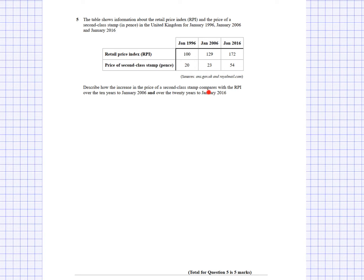I need to compare the increase in the price of the second-class stamp with the RPI. RPI is the concept that prices in general are increasing or decreasing - it's a measure of inflation. It looks at certain items and services that people might purchase and calculates a rough estimate of how much more a person is likely to spend in a whole year compared to a previous year. RPI is based on lots and lots of different prices put together.